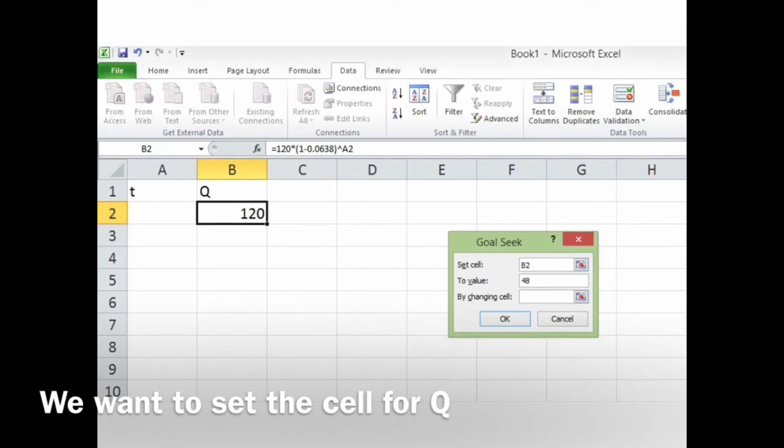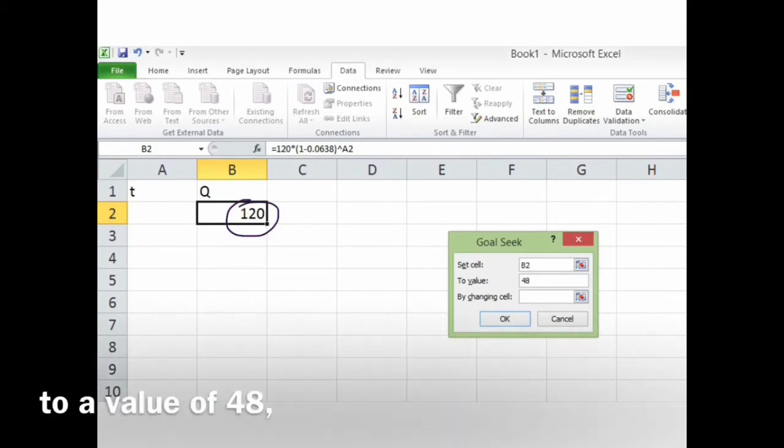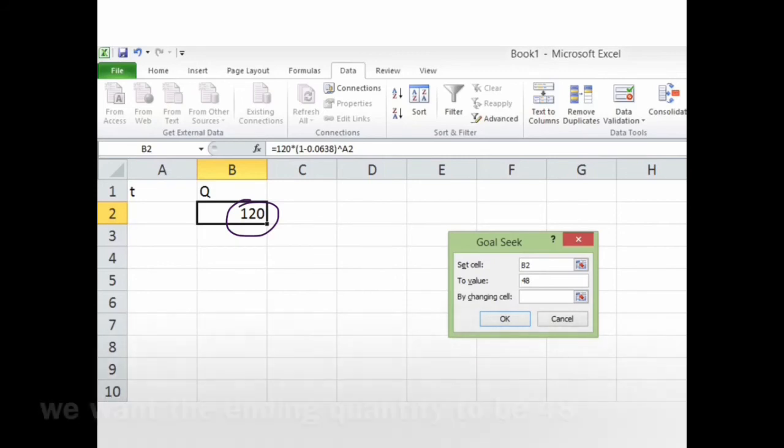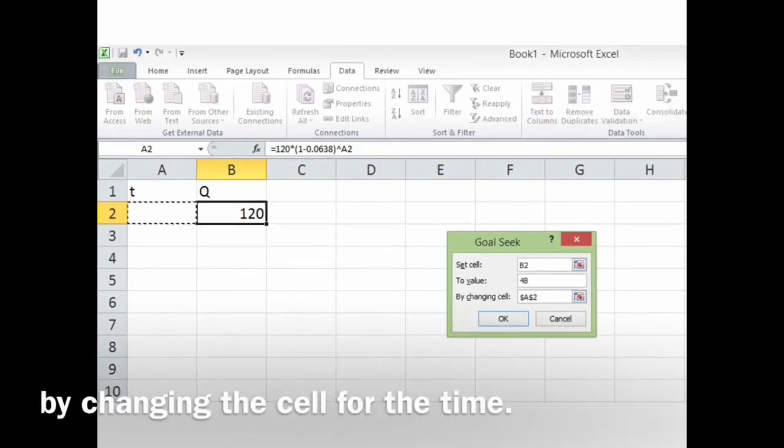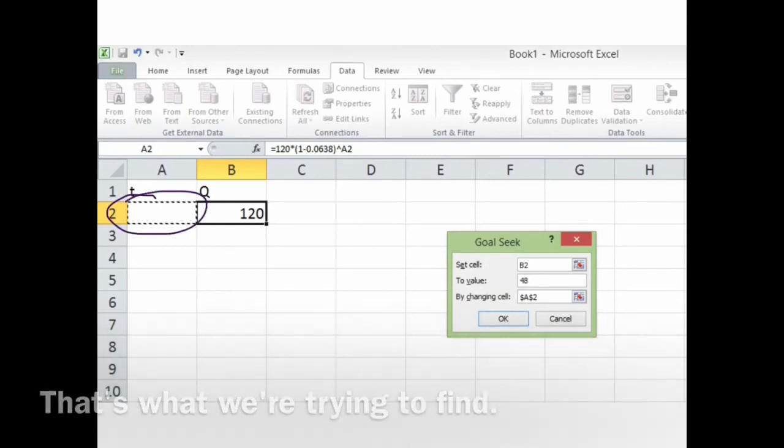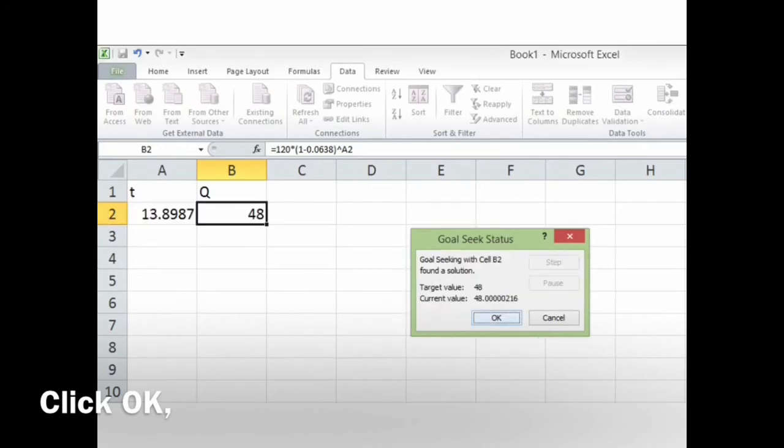We want to set the cell for Q, so that's B2, to a value of 48. We want the ending quantity to be 48, by changing the cell for the time. That's what we're trying to find. Click OK, and it comes up with a solution.